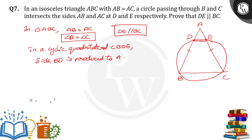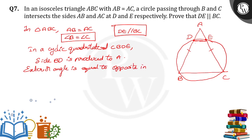And we know that the exterior angle is equal to the opposite interior angles. So the exterior angle at E is equal to the opposite interior angles.